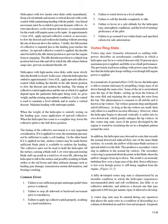At approximately 1 foot AGL, apply upward collective control as necessary to slow the descent and cushion the landing without arresting the rate of descent above the surface. Usually the full amount of collective is required just as the landing gear touches the surface. As upward collective control is applied, the throttle must be held in the idle detent position to prevent the engine from re-engaging. Helicopters with high-inertia rotor discs settle more slowly after the throttle is closed. When the helicopter has settled to approximately 1 foot AGL, apply upward collective while holding the throttle in the idle detent position to slow the descent and cushion the landing.